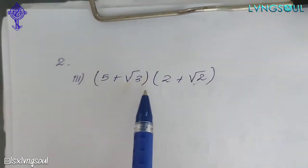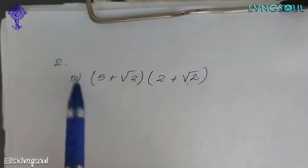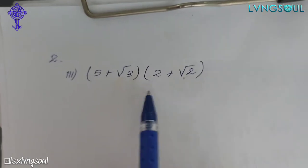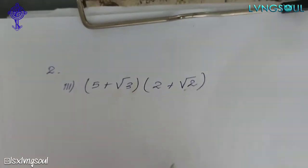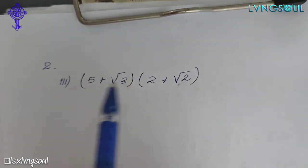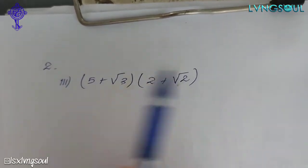So this means that if the numbers are in between a bracket, it means that it is multiplication. As we all know, these are irrational numbers.